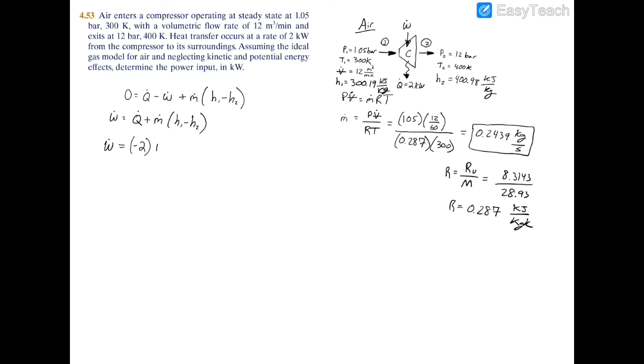So you have -2 plus the mass flow rate, 0.2439 kilograms per second, times that specific enthalpy difference, 300.19 minus 400.98. Now if you plug this in your calculator, you'll have that W dot, or the input power, equals -26.58 kilowatts. It makes sense that this is negative because it means the compressor is consuming power, the power is coming in. That is the case for compressor and pump devices.